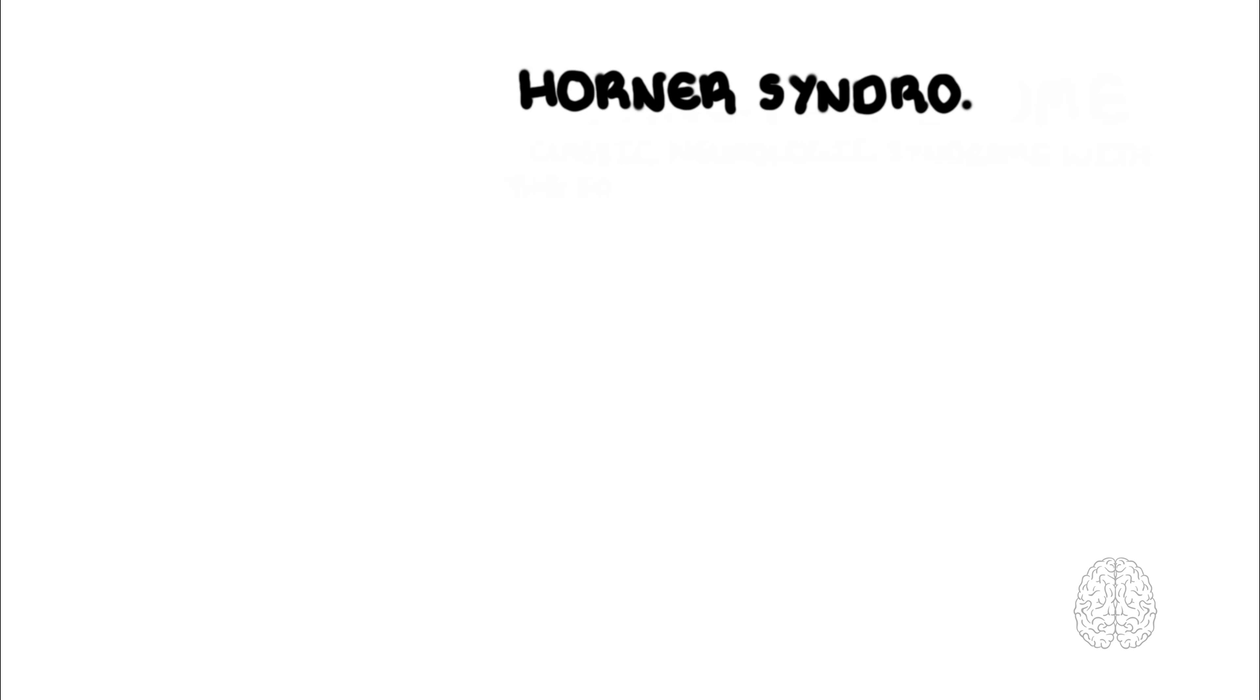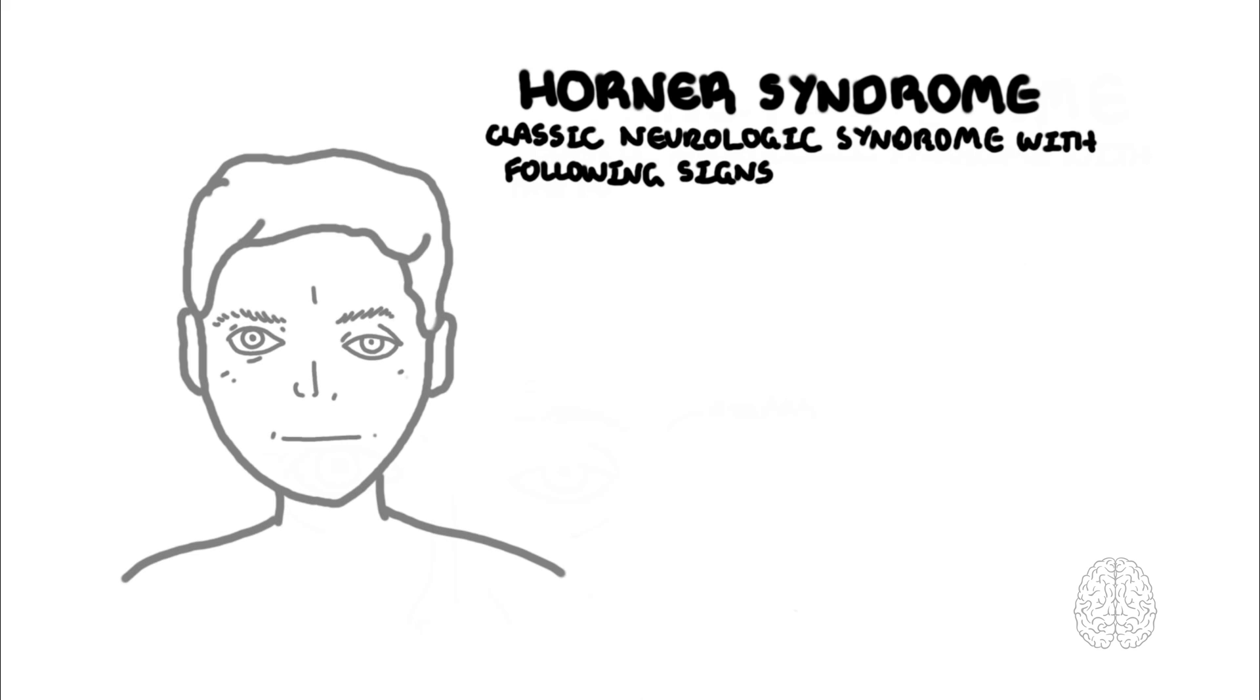Horner's syndrome is a classic neurologic syndrome with three distinct clinical signs on one side of the face. These are ptosis, which is drooping of the eyelid, meiosis, constriction of the pupil, and anhydrosis, no sweating on the affected side.